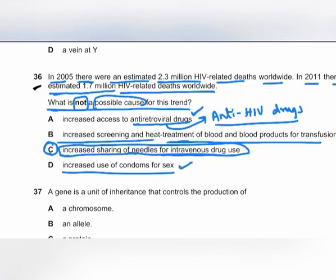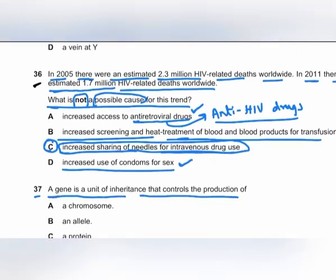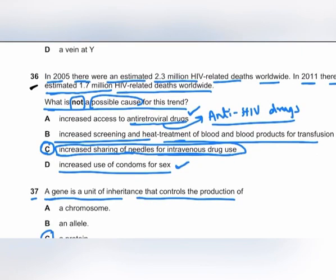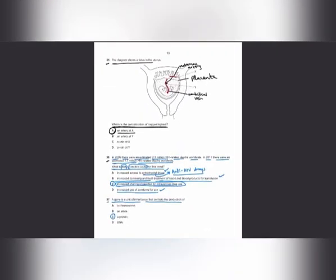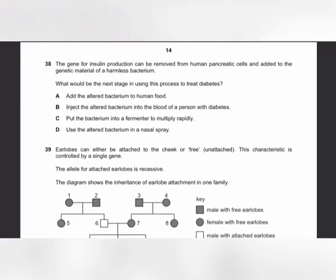MCQ number 37: a gene is a unit of inheritance that controls the production of a protein. A gene codes for protein or gives instructions to a cell to make a protein. The answer is C — a protein.